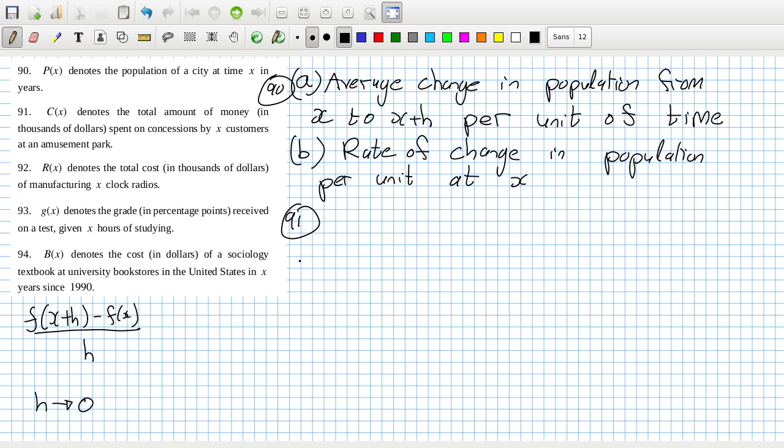And then honestly the only difference in 91, 92, 93, and 94 is going to be the keyword. So this is population per unit time, and this is population per unit time.